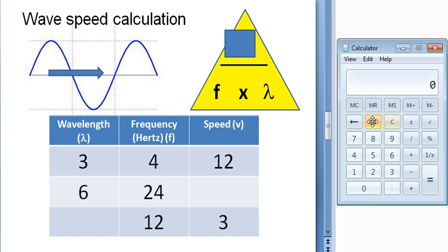So over to my calculator, I need to have 6 multiplied by 24, and the answer is 144. So the speed is 144 meters per second. Pop that in.